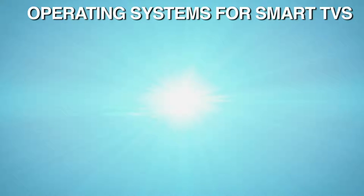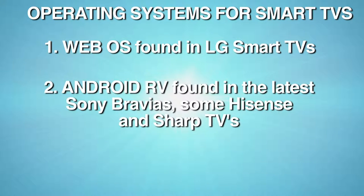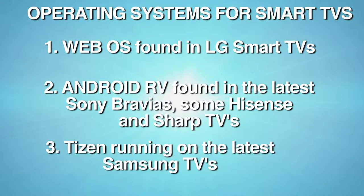Smart TVs, just like smartphones, use an operating system. But there's a slight difference in the operating systems that TVs and phones use. For TVs, we have WebOS, which runs on LG televisions. We also have Android TV operating system, which runs on the latest Sony Bravias, some Hisense, and Sharp TVs. And then we have Tizen, which runs on the latest Samsung TVs. The operating system we use is going to determine the downloaded applications that you're going to have on your smart TV.